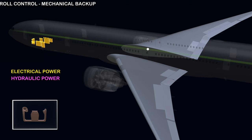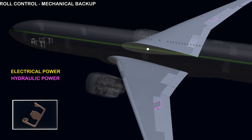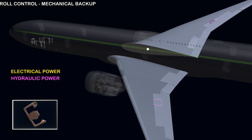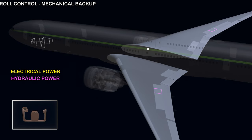Roll control mechanical backup: in a fly-by-wire system, flight computers control all surface deflection. In the unlikely event of a complete electrical system shutdown, the control surfaces will not operate and the aircraft's roll control will be lost. To ensure some degree of roll control is still available, the control wheels are mechanically connected to spoilers 4 and 11. In a left roll, spoiler number 4 will deflect to reduce the lift on the left wing and roll the aircraft left. To roll the aircraft right, spoiler number 11 will reduce the lift on the right wing. The mechanical connection to the spoilers is a backup in case of electrical failure, though the aircraft still needs hydraulic power to operate the spoilers.